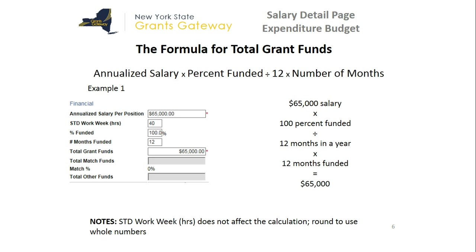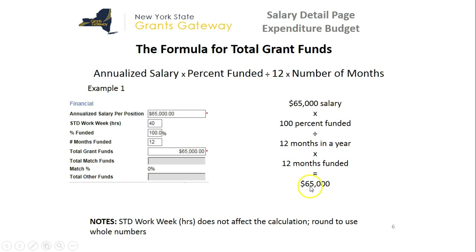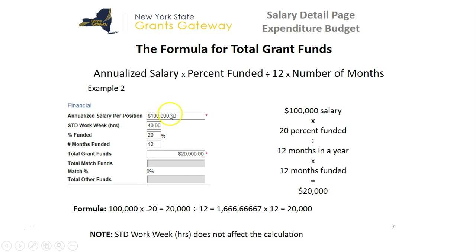Let's take a look at a couple of other examples to see how to do the math. This first one is easy because it's 100% funded — the person makes $65,000 a year, they work 40 hours a week, and we're asking for the grant to fund 100% of their salary for 12 months. That equals $65,000 because $65,000 times 100% is $65,000. In the second example — the same as the original one — $100,000 per year, 20% funded for 12 months is $20,000.